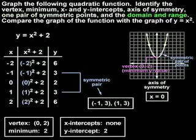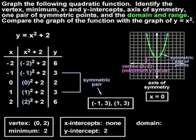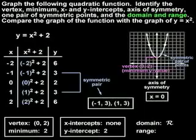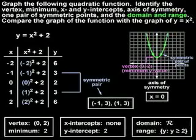Next, we're asked to find the domain and range of the function. The domain of a function is the set of all x-values of the function. The x-values on a coordinate system are the left and right values, and we can see that the parabola is expanding infinitely to the left and to the right, so the domain of the function is all real numbers. The range of a function is the set of all y-values. We can see that the parabola is expanding infinitely upward, but it never goes below the y-value of 2. So the range of this function is y such that y is greater than or equal to 2.